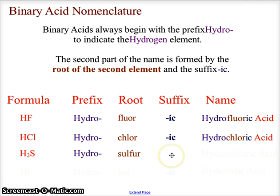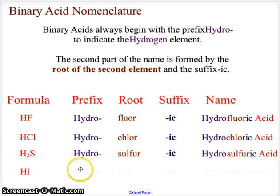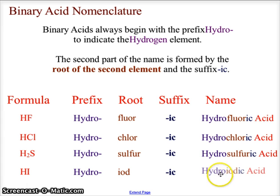Two more examples: H2S gives us 'hydro' for hydrogen, 'sulfur' for the sulfur element, and '-ic', giving us hydrosulfuric acid. And HI gives us 'hydro', 'iod' for iodine, and '-ic', giving us hydroiodic acid. In binary acids it's straightforward: hydro + root of the nonmetal + ic.